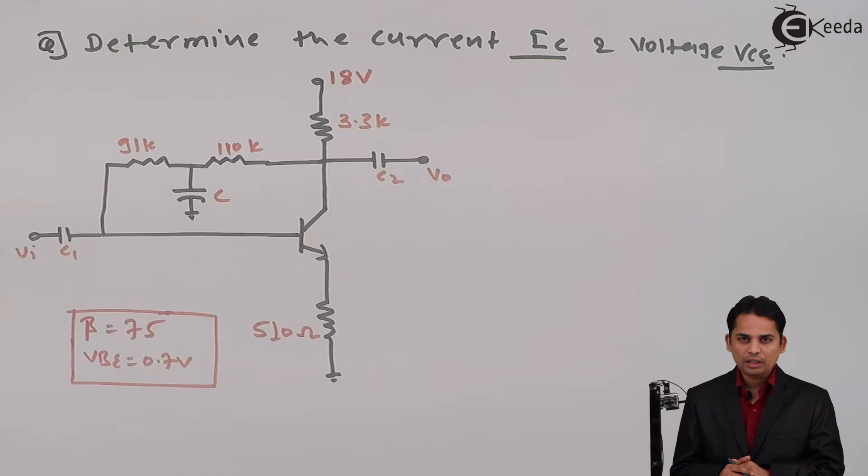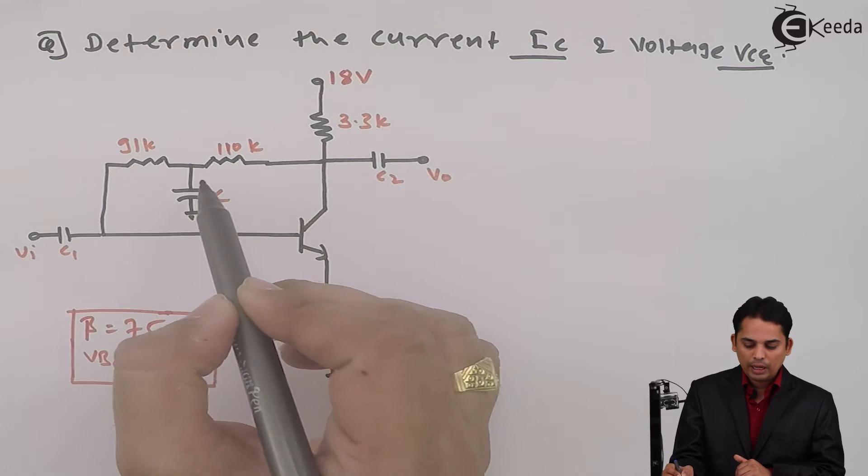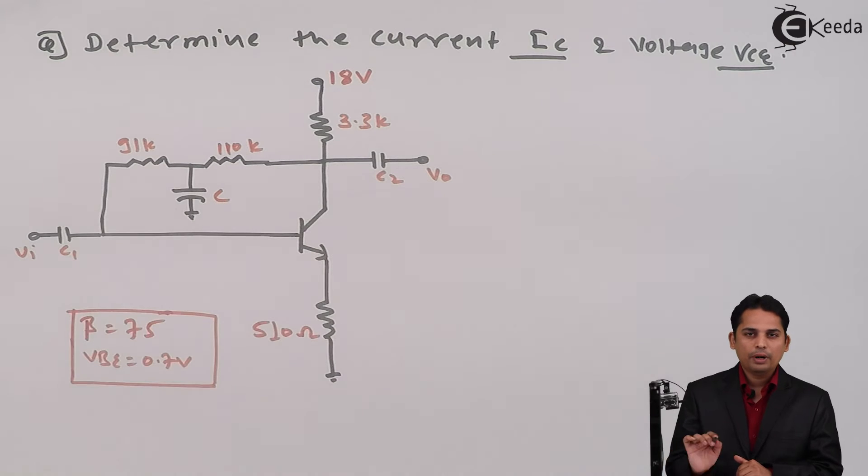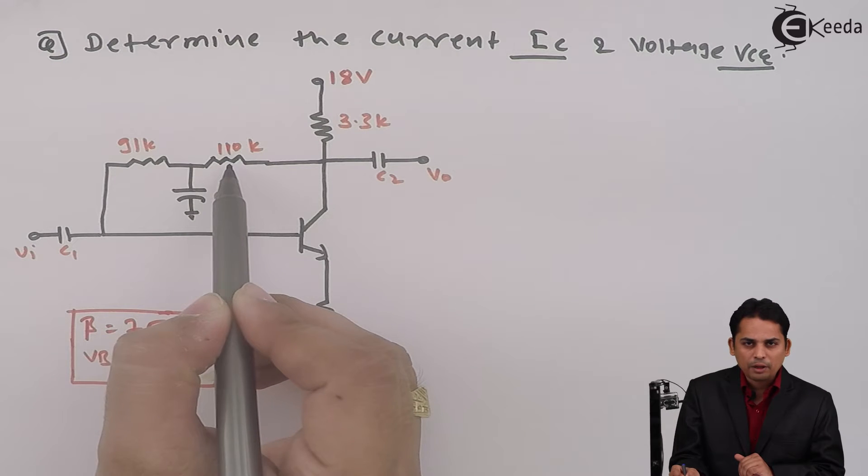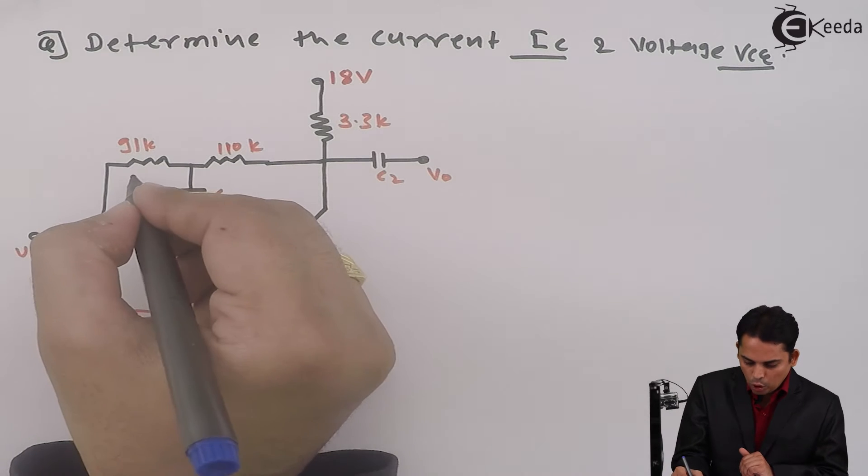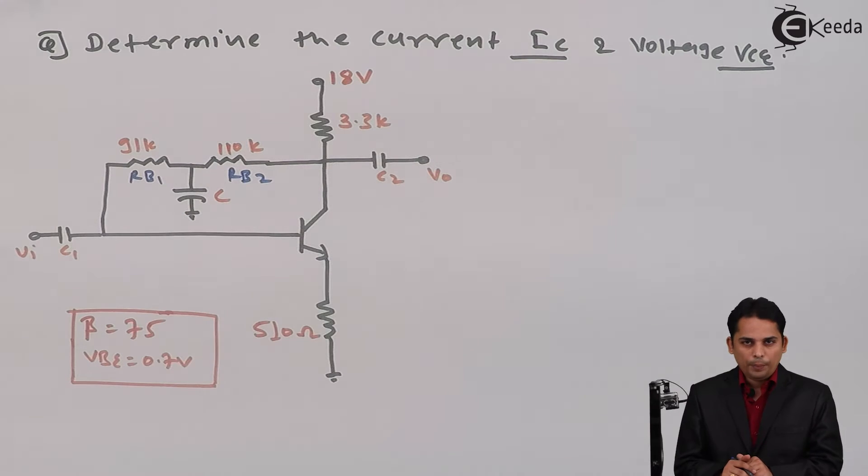If we see the circuit, we will come to know that this is collector-to-base bias because a loop from collector is joined to the base with the help of resistors. But now there is a certain change in the circuit diagram. You can see that there are two different resistors at the base, let's call them RB1 and RB2. But in our normal circuit there has to only one base resistor at the input. So, how to tackle this problem?